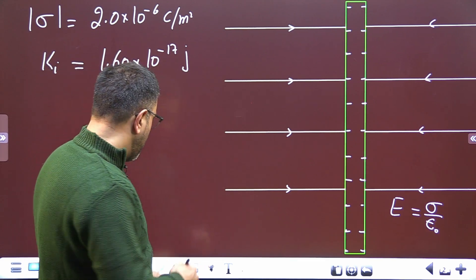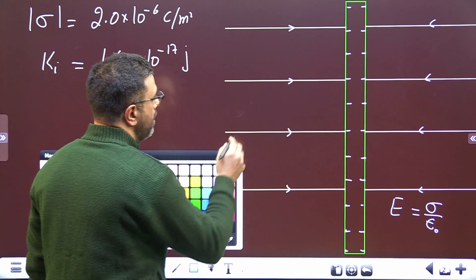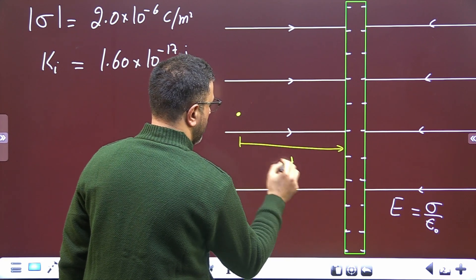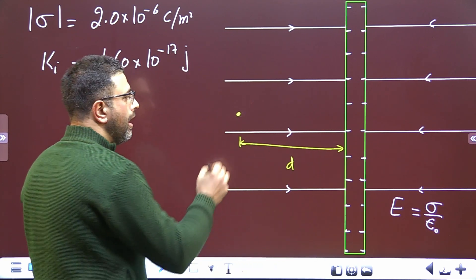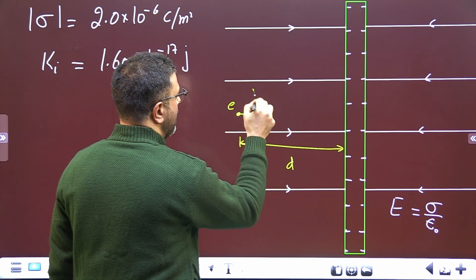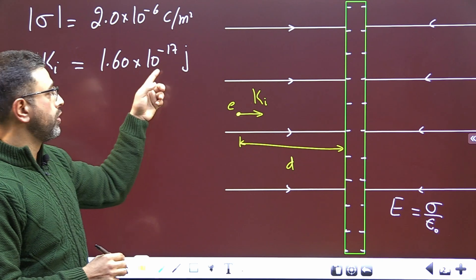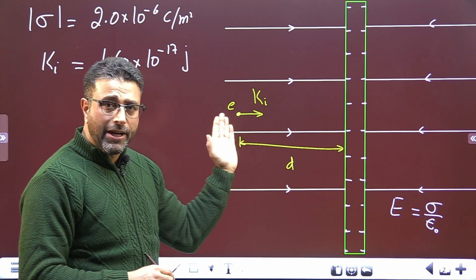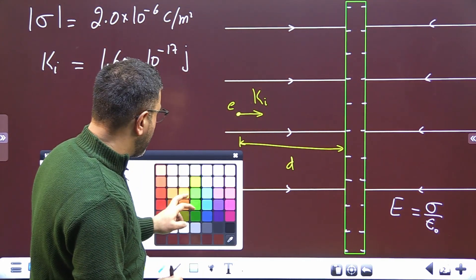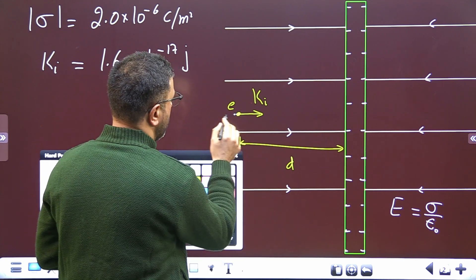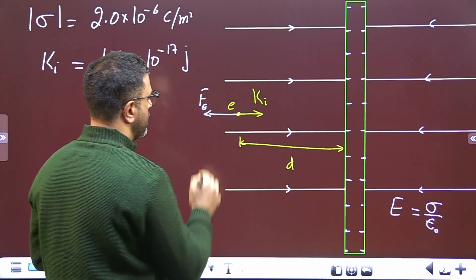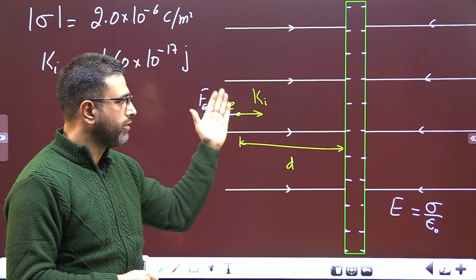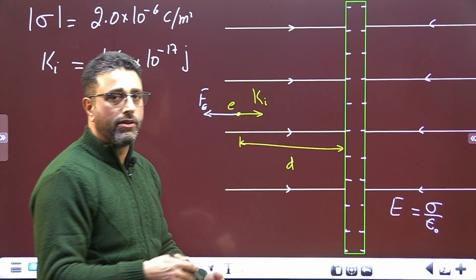Sigma is given. We launch an electron from a distance D from the metallic plate with initial kinetic energy Kᵢ = 1.60 × 10⁻¹⁷ joules. This electron, being negatively charged, will experience a force opposite the direction of the electric field — so the electrostatic force acts away from the plate. As the electron moves towards the plate, it experiences this opposing force, so it slows down and ultimately stops.